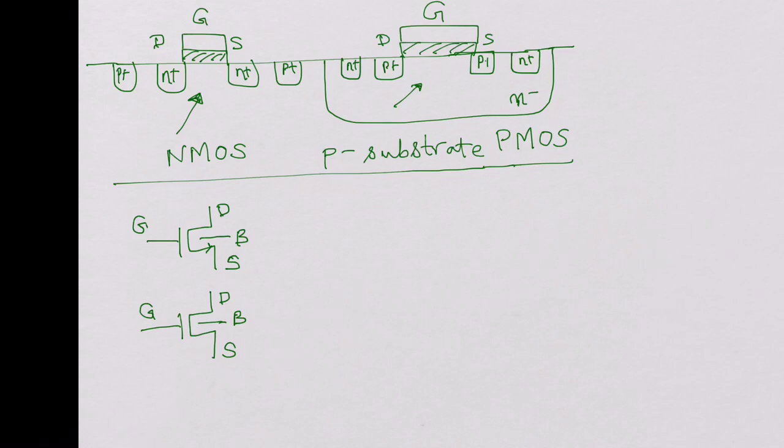And the PMOS devices have a symbol like this. Usually there is a bubble on the gate. So this is the gate. And this is the source on the top. We usually put source on the top because for PMOS devices, the source is the side that has the higher voltage. And drain is here. And this is the bulk or the N-well here, in this case, the bulk of the PMOS device.